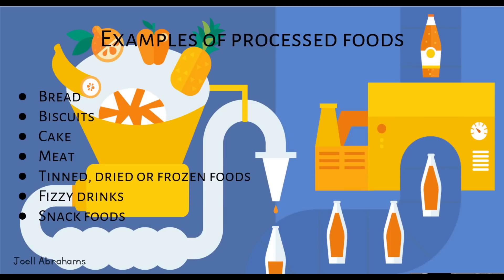Examples of processed foods: bread, biscuits, cake, meat, tinned, dried or frozen foods, fizzy drinks and snack foods.